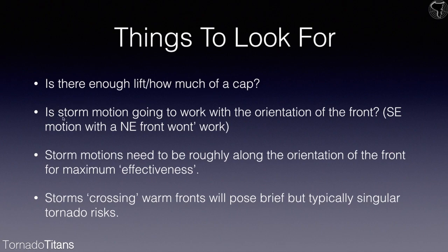Is storm motion going to work with the orientation of the front? That's another key question. For instance, if you have a warm front arcing southeast and storm motions are going to be northeast, storms aren't going to be moving along the front — they're going to be crossing over it. You can get tornadoes that way, but typically that's not a favorable warm front scenario. For maximum effectiveness, you want a warm front arcing east with storm motions roughly east, moving along the front, riding the boundary — storms tend to do that, and as they do they'll take advantage of the better low-level environment along the warm front.